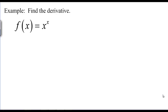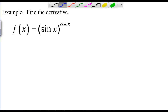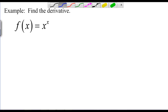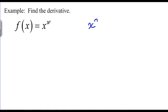We'd like to take the derivative of a function raised to another function — in this case the simple x raised to the x, but it could be something more complicated like sine raised to the cosine. We can't use the power rule because we don't have a number in the exponent, and we can't use the a-to-the-x rule because we don't have a number in the base. Neither rule works, so we need to come up with something completely new.